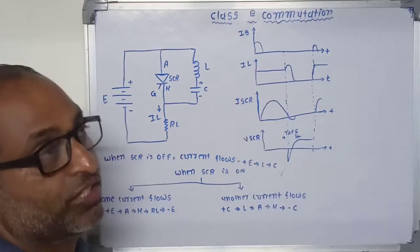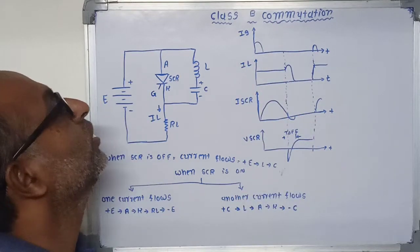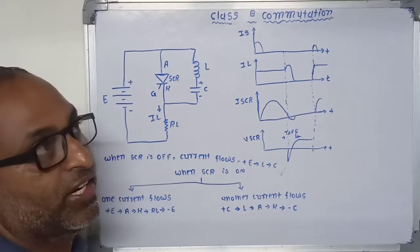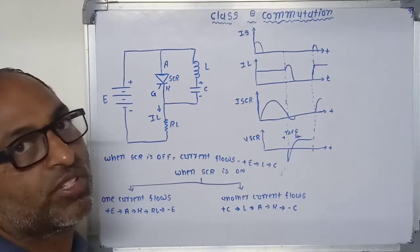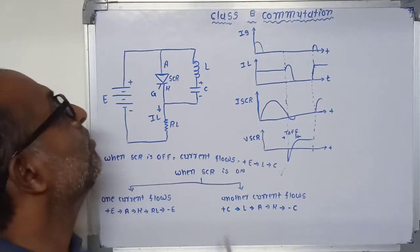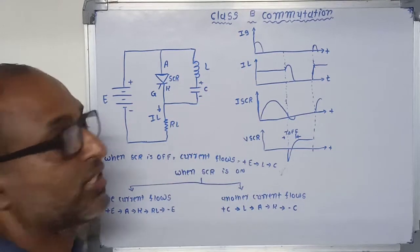Class B commutation. This is also a self-commutating circuit in which commutation is achieved by using an inductor L and capacitor C.